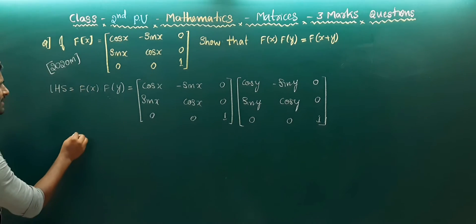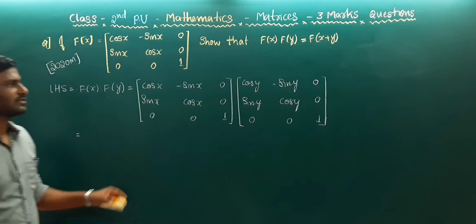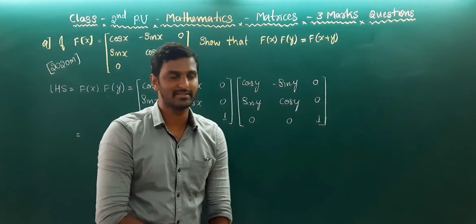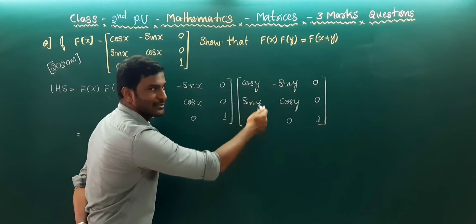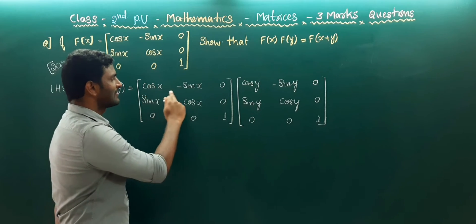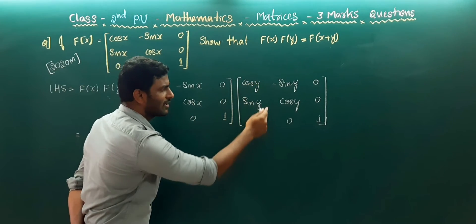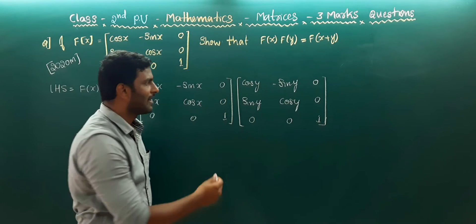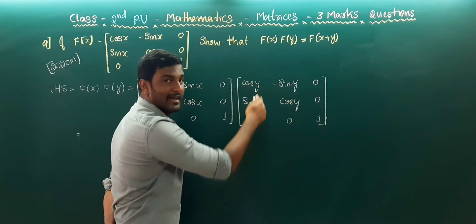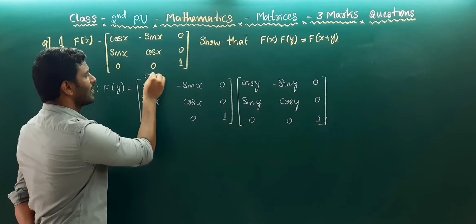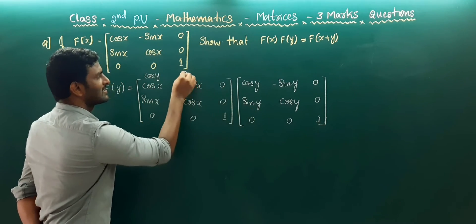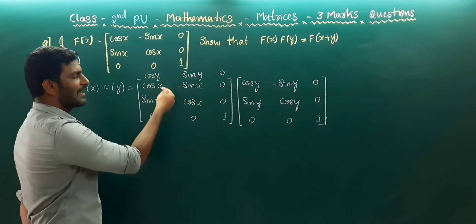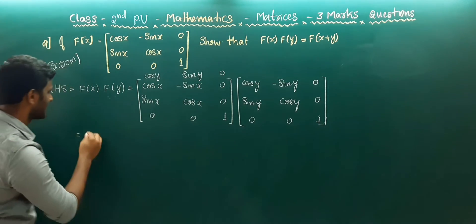So let us multiply the two matrices. There is a very interesting and easy method of multiplying two matrices. First row multiplied with first column, then first row with second column, first row with third column, and so on. Let us take the second matrix first column, that is cos y, sin y, and 0, and just multiply the corresponding elements. We will get an easy answer.